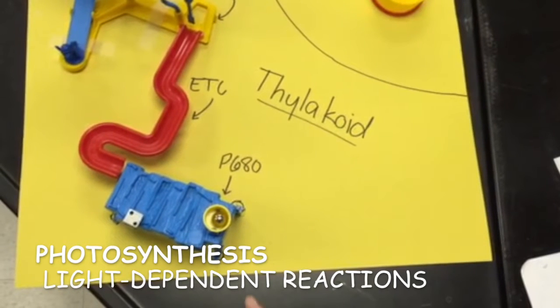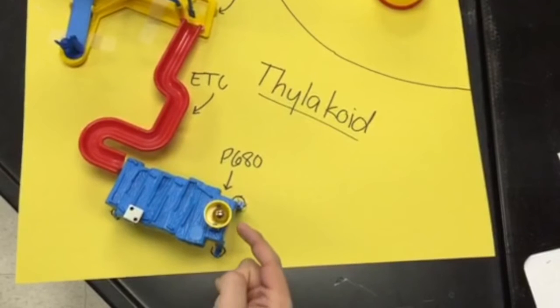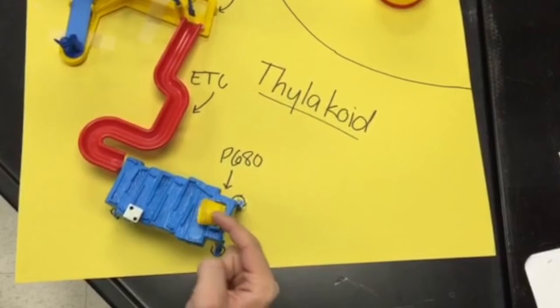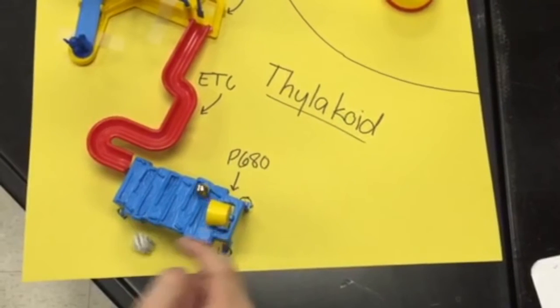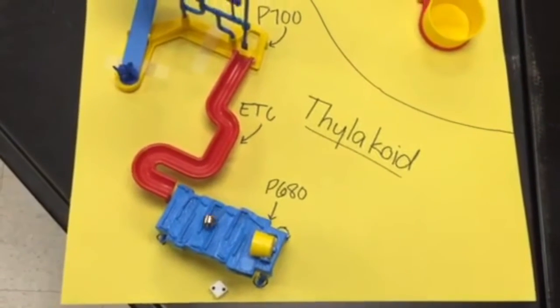A photon, represented by Michael's finger, enters the light harvesting complex P680 housed in the thylakoid, providing energy for an electron to enter the ETC which produces ATP as a result of the proton gradient that is formed.